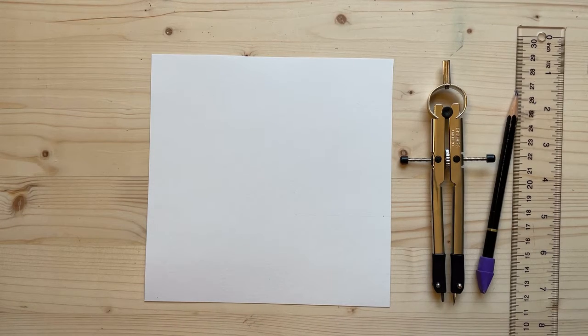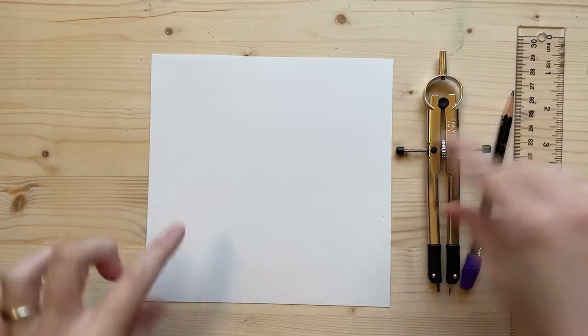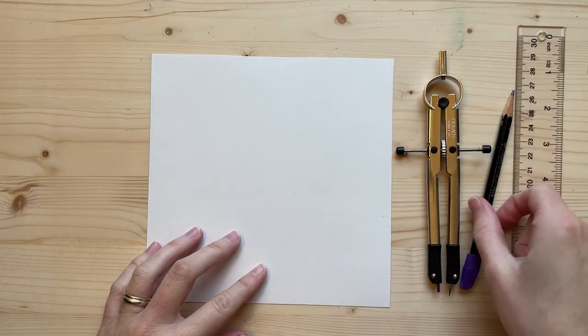To make an equilateral triangle with a drawing compass, you will need the 7-inch square that we cut out, a ruler, and a pencil.